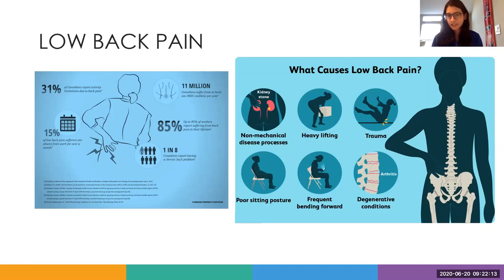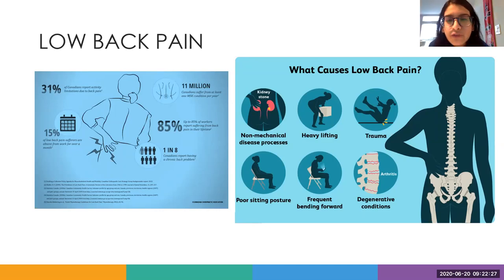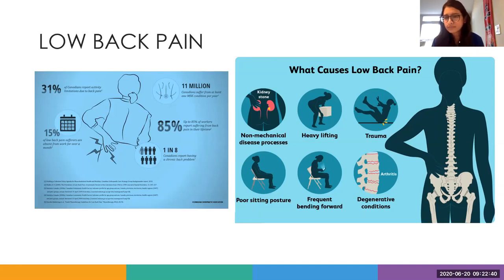Another related cause is frequent bending forward posture. Along with text neck, we also have back slouching — sitting slouched on the couch or bending forward toward the screen while working. All of this changes the alignment and posture. Frequent bending is also a cause, and a very clear cause is trauma. If you have a fall that leads to back pain, it can later on over the years lead to other complications.